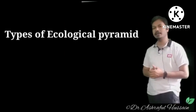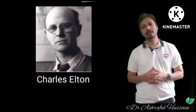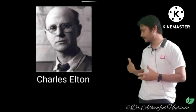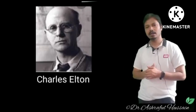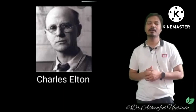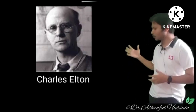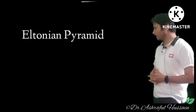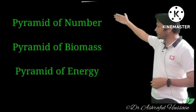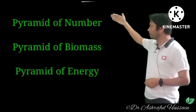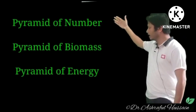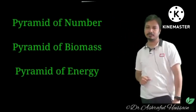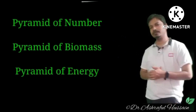Now let's come to the different types of ecological pyramid. Charles Elton, in 1927, gave this concept of the ecological pyramid. It is also known as the Eltonian pyramid. The different types are: pyramid of numbers, pyramid of biomass, and pyramid of energy.